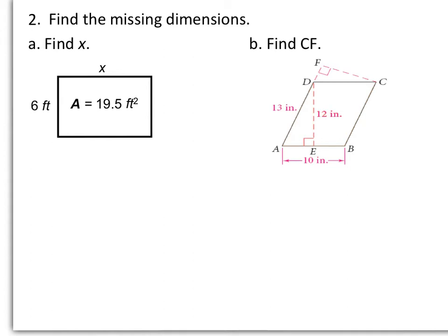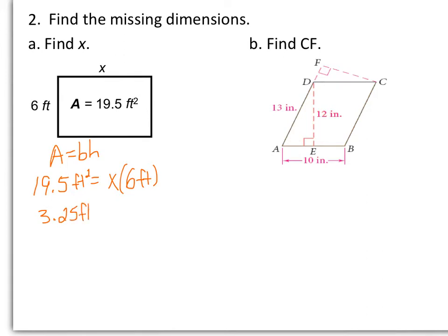In number 2, we want to find the missing dimensions. In letter A, we are looking for x, which is our base in the rectangle. Area equals base times height. Our area is 19.5 feet squared, x is our base, and 6 feet is our height. Dividing both sides by 6 feet, we get x equals 3.25 feet.